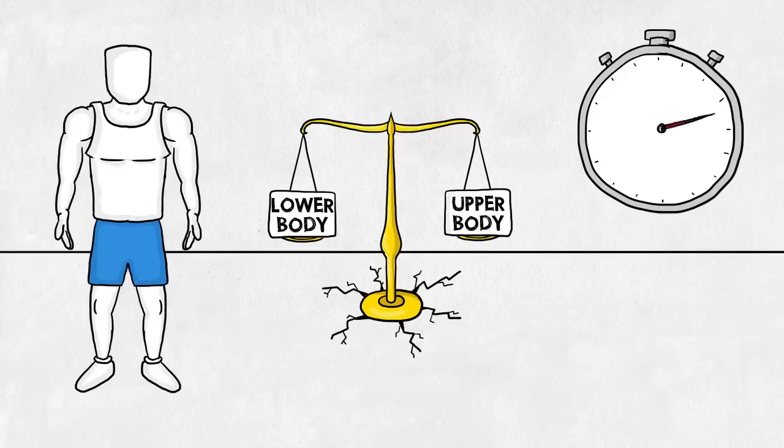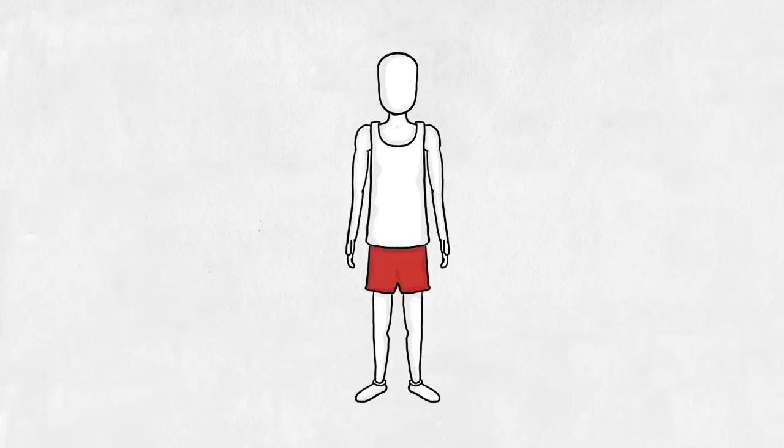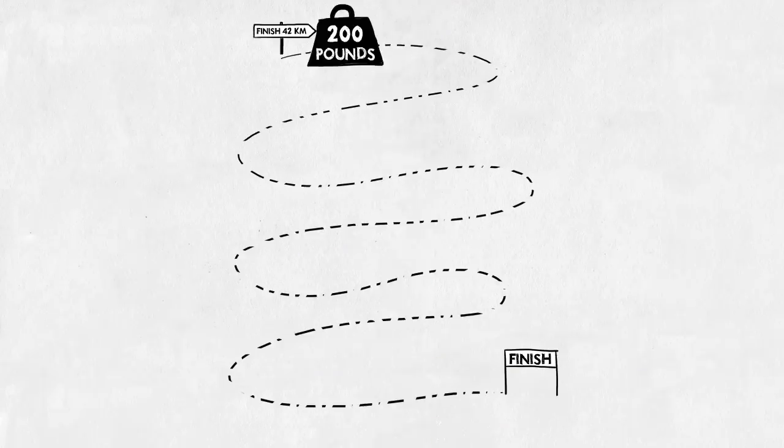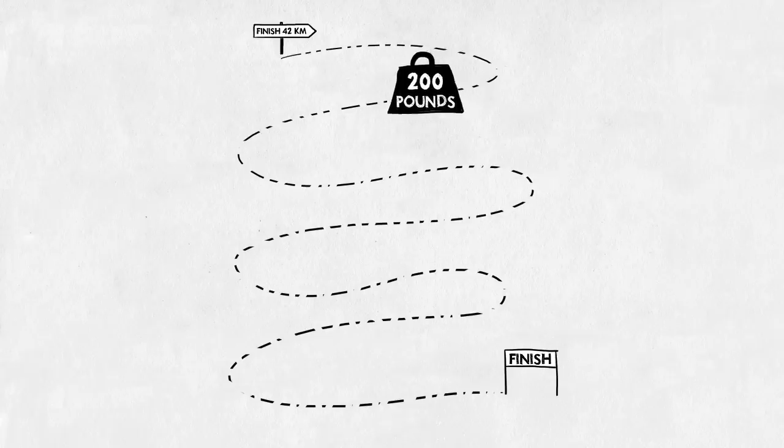Because the sprinter only has to perform for a couple of seconds, the added weight is trivial. The marathoner is a different story. Every pound in his body has to be carried around for a total of 42 kilometers.